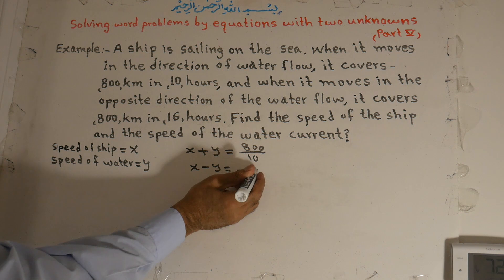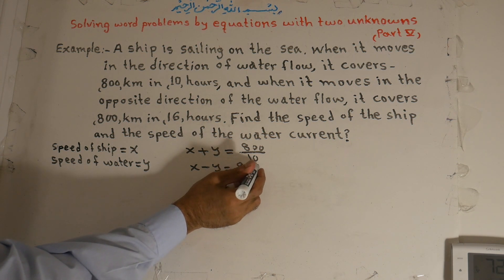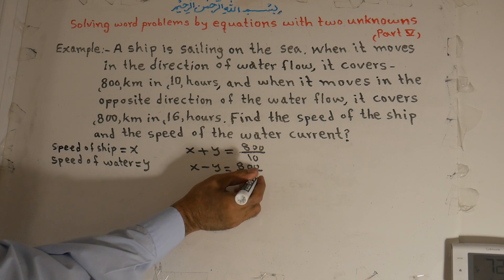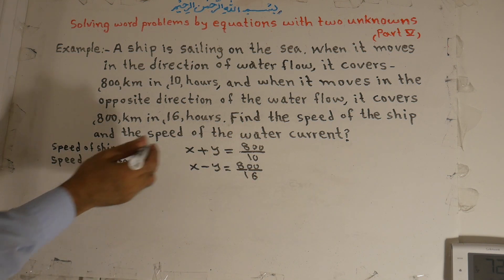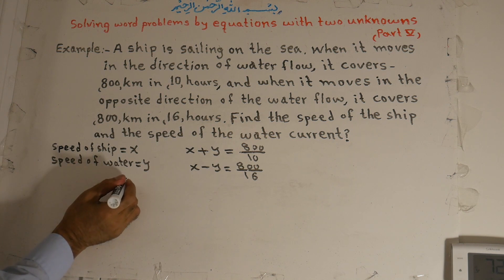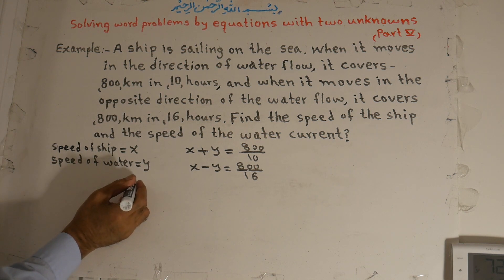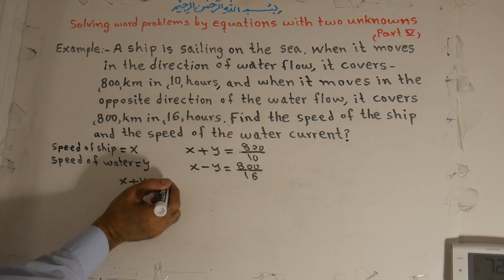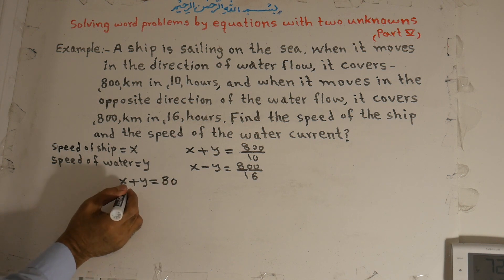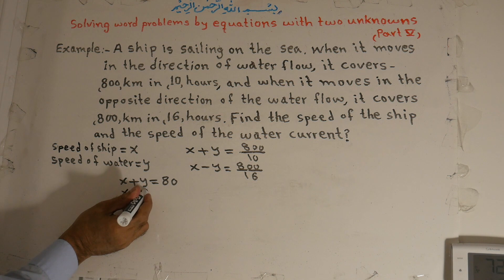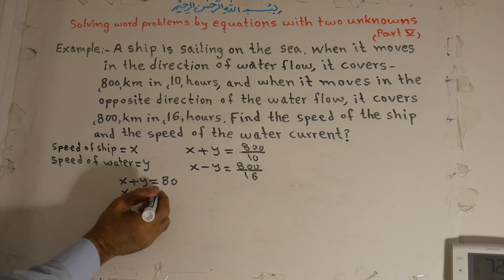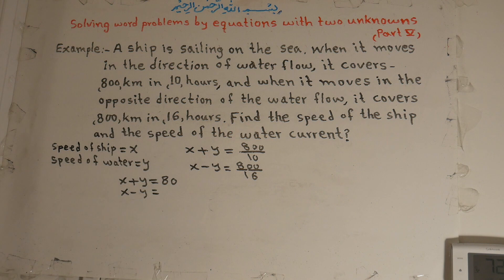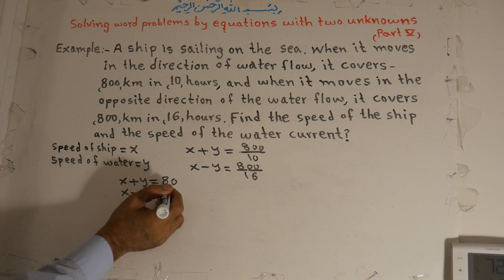Simplifying these equations: x plus y is equal to 800 divided by 10, which is 80. And x minus y is equal to 800 divided by 16, which is 50.